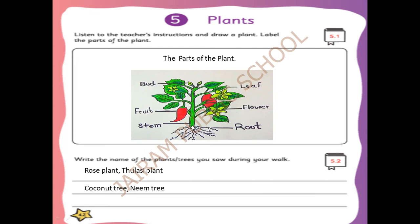Parts of the plant - first you have to draw the parts of the plant. Start from the stem, then draw the leaves, you can color it afterwards. Then draw the bud - B-U-D, you can draw one or two buds. Next draw the roots - it is below the soil, so draw the roots under the soil. You can put small lines for the roots. This is the root.